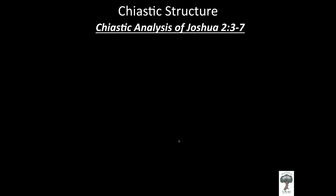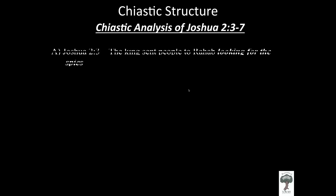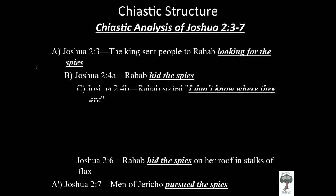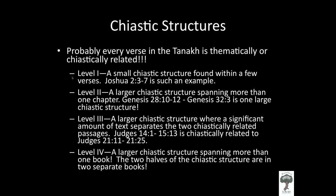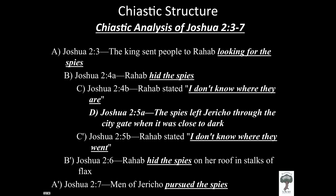Your whole Bible is written this way, and all of the stories of the Bible are written this way. Let's look at a slightly larger chiastic analysis of Joshua 2, verses 3 through 7. The king sent people to Rahab looking for the spies. Going chronologically through this passage — verses 3, 4a, 4b, 5a, 5b, 6, and 7 — we can see that there is a thematic pattern emerging.